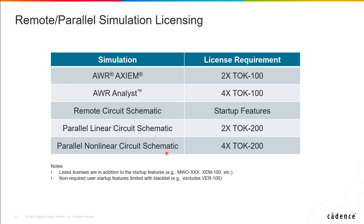With all these benefits shown, let me quickly explain how this works from a licensing perspective. Axiom and Analyst are EM solvers and use tokens to run remotely — two tokens for Axiom, four tokens for Analyst. For remote circuit schematics, it uses your startup features: if you have Microwave Office 200 on your computer, it requires a 200 license on the other computer. For parallelizing on one computer with four jobs, you need two tokens — called Token 200 to differentiate from EM tokens — for each parallel job beyond what you're already simulating. For nonlinear, it's four tokens because that's a more complex simulation type.